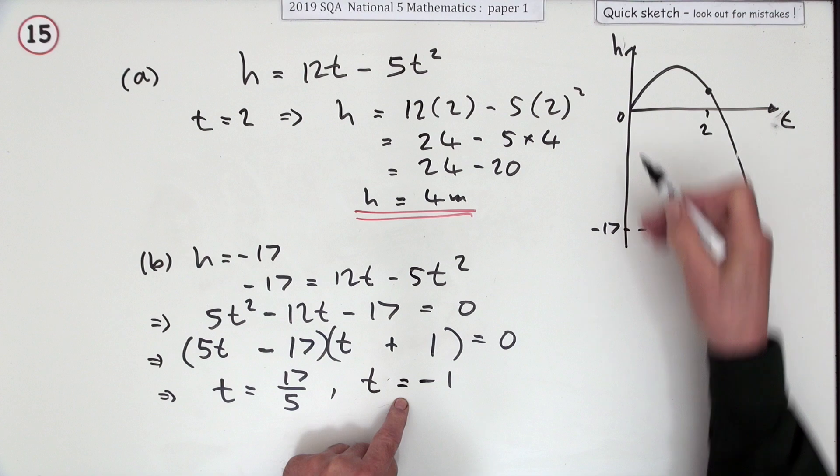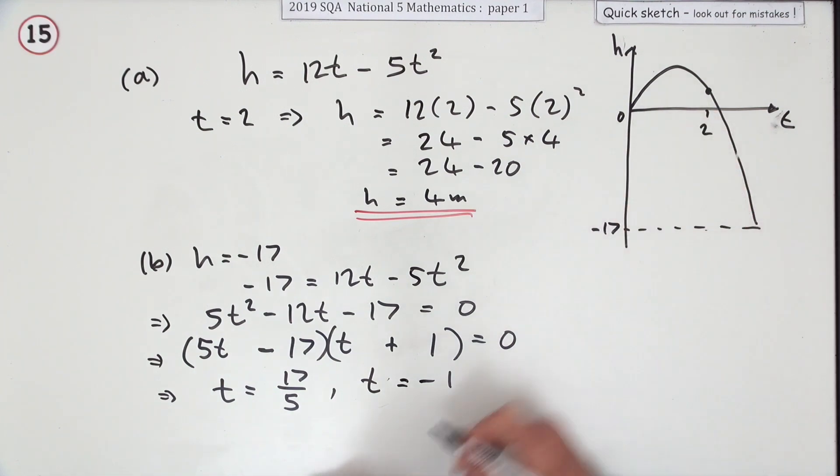Well, negative 1 represents time going backwards in this curve, so I'm not interested in that. So that means I'm using that one, so t is equal to - 5 into 17 goes 3 remainder 2 - 3.4 seconds. I'll give the reason: t is greater than zero.